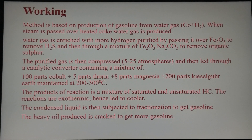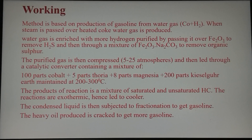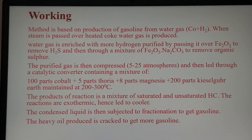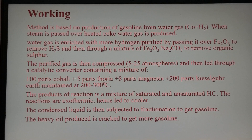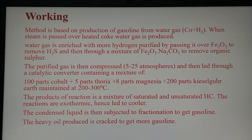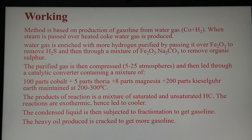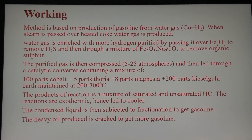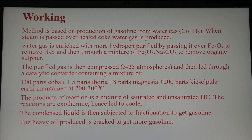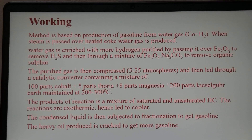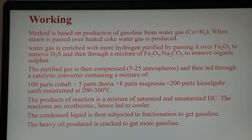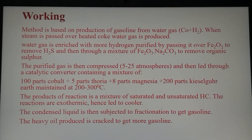The compressed mixture is then passed through a catalytic chamber containing the catalyst in the form of finely ground powder consisting of 100 parts of cobalt, 5 parts of thorium, 8 parts of magnesia, and 200 parts of kieselguhr earth, maintained at 200 to 300 degrees centigrade. When water gas is passed over the catalyst at high temperature, the low molecular weight hydrocarbons present in it get polymerized and produce a mixture of saturated and unsaturated hydrocarbons.